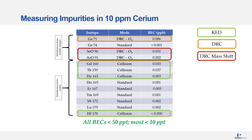Here we're looking at measuring impurities in 10 ppm cerium. Looking at interferences from double charging, gallium now needs to be used in a DRC oxygen mode, and selenium and arsenic will be in a DRC oxygen mass shift mode. Moving on to interferences from the oxides, there is a good spread of either using collision mode or standard mode to get the best BECs.